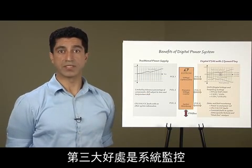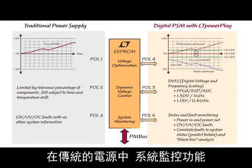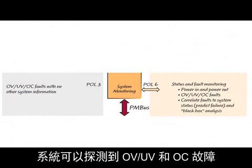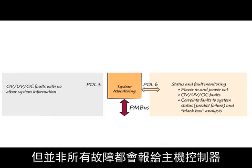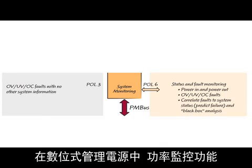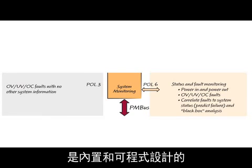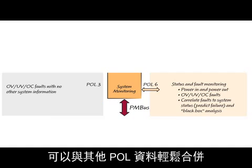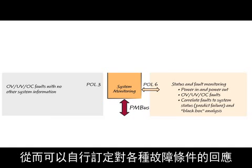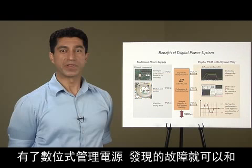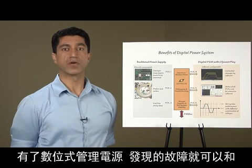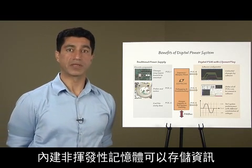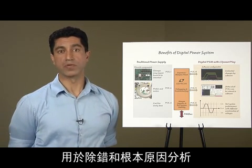The third benefit is system monitoring. In traditional power supply, system monitoring functions are usually separate from the DC-DC regulator. Over-voltage, under-voltage, and over-current faults can be detected, but not all are reported to a host controller. In the digitally managed power supply, power monitoring functions are built-in and programmable. Fault conditions for one POL can be easily combined with other POLs to create a customized response to a variety of fault conditions. Detected faults are correlated with high-accuracy measurements of voltage, current, and temperature, and internal non-volatile memory can store the information, useful for debugging and root cause analysis.